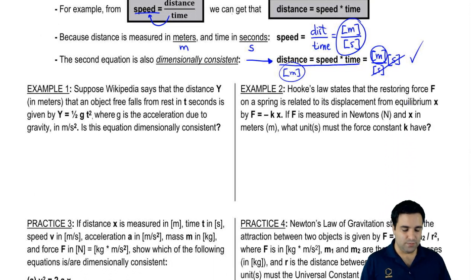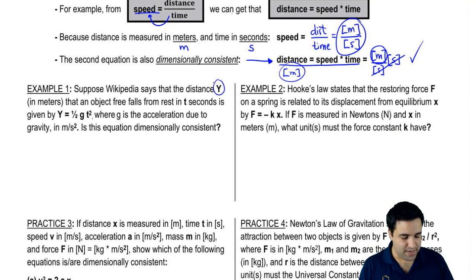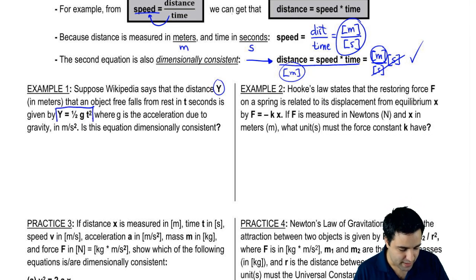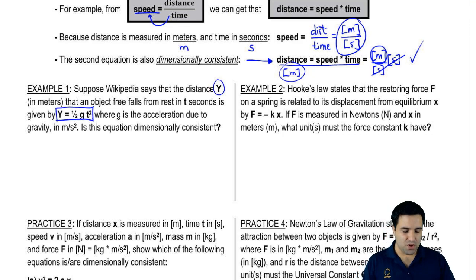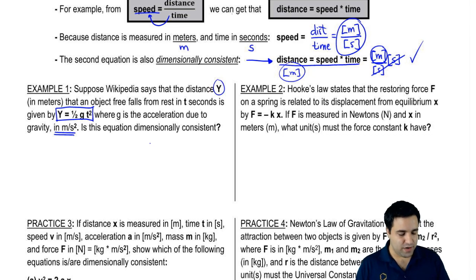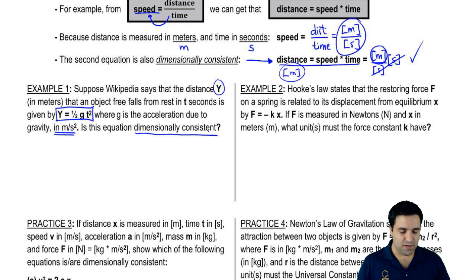Let's do an example. Suppose Wikipedia says that the distance y, measured in meters, that an object free falls from rest in t seconds is given by this equation — and this is actually correct, not just Wikipedia making it up. Where g is the acceleration due to gravity — we'll talk about that later — but for now it suffices to know that the units are meters per second squared. The question is: is this equation dimensionally consistent?